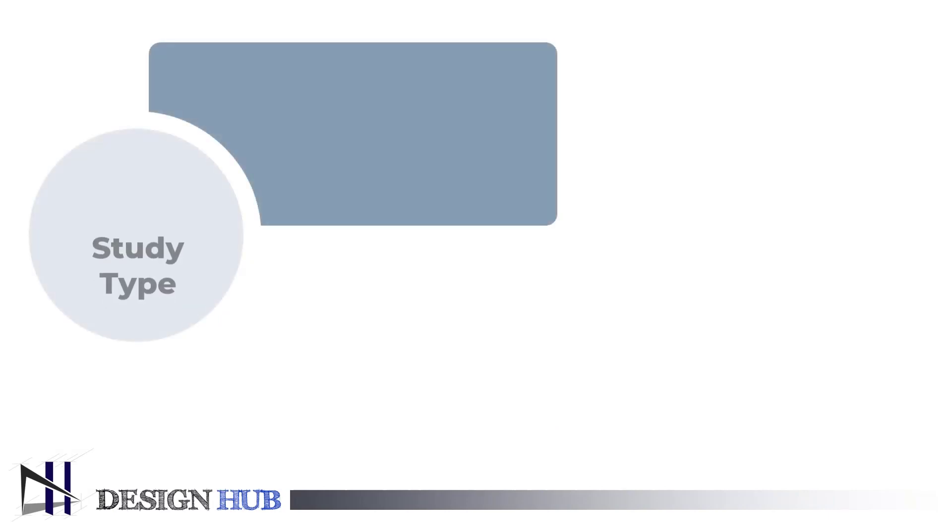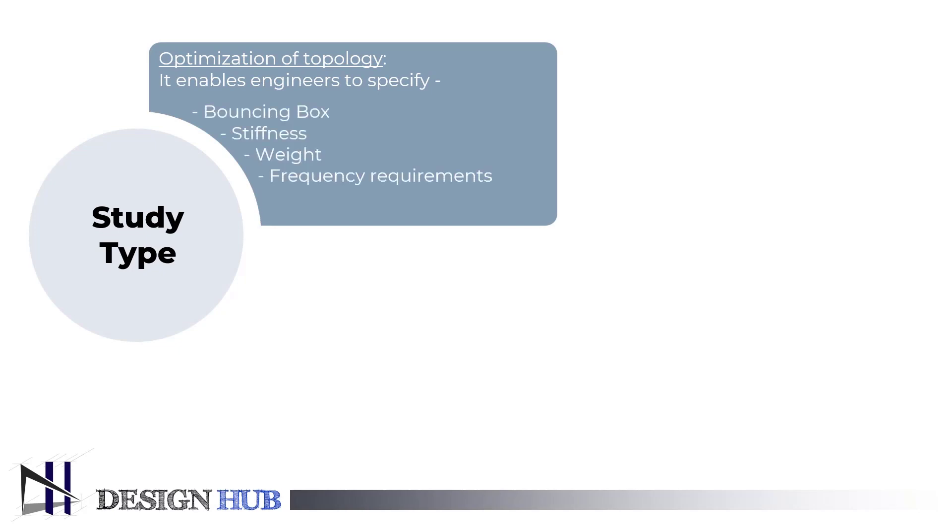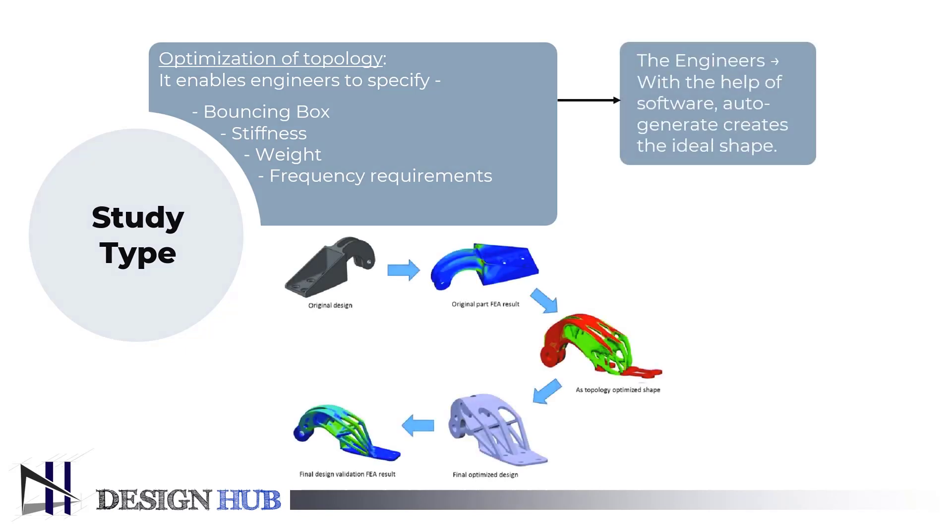The seventh study type is optimization of topology. This study enables engineers to specify the bounding box, stiffness, weight, and frequency requirements of the component, and let the software generate the ideal shape to meet those requirements while taking manufacturing constraints into account.